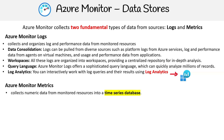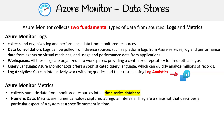In contrast, Azure Monitor metrics collects numeric data and organizes it into a time series database. Metrics are numerical values captured at regular intervals — a snapshot that describes a particular aspect of a system at a specific moment in time.